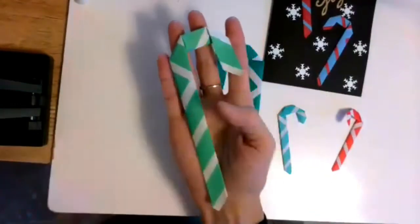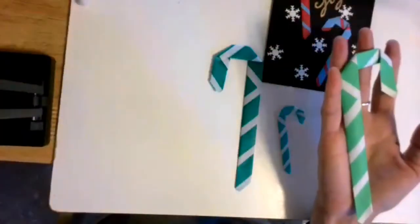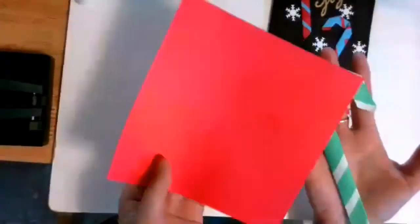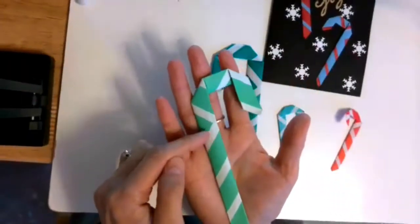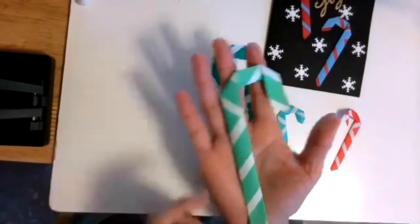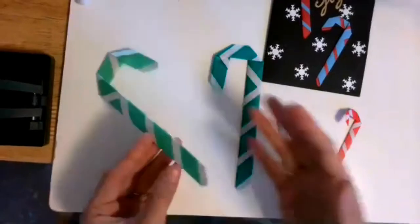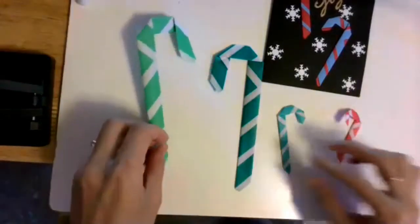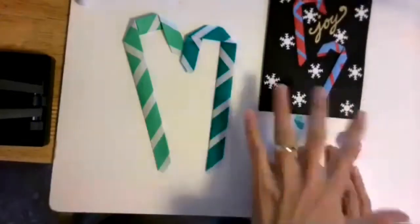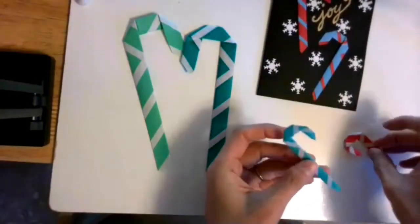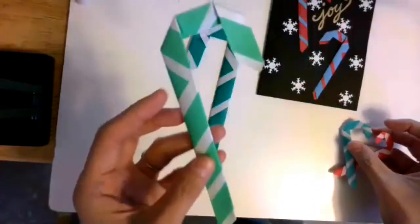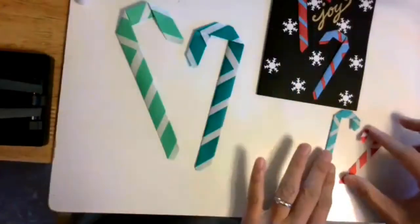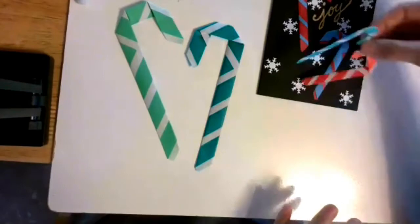I use paper that's one color on one side and white on the other, like this red and white one. You can make greeting cards, use them as embellishments on gift wrapping, or hook them on the Christmas tree. Let's get started. This one is quite easy.